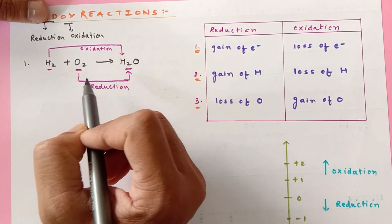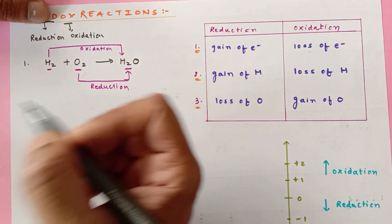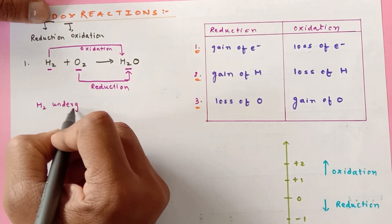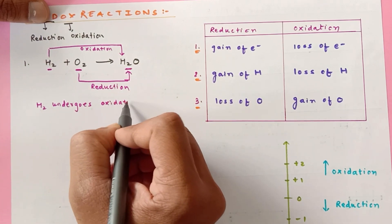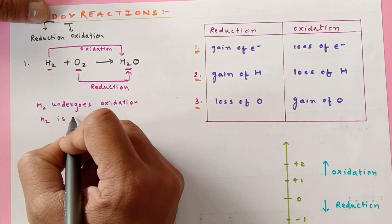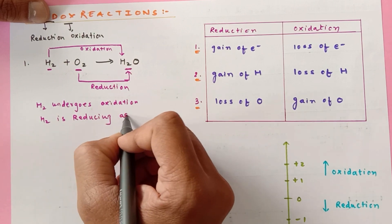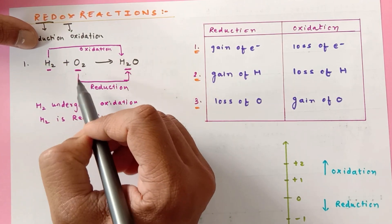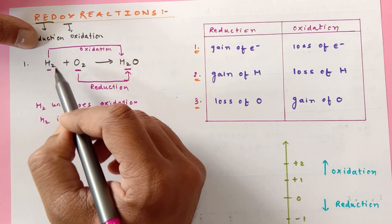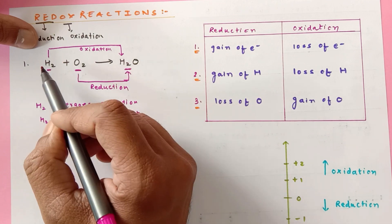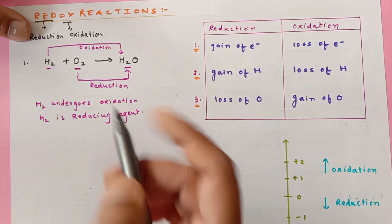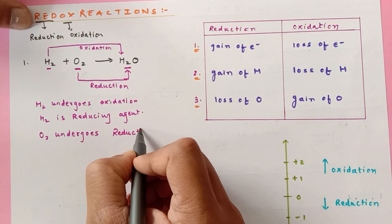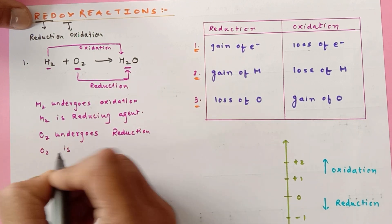So here hydrogen undergoes oxidation and oxygen undergoes reduction. Now, the substance which undergoes oxidation is called the reducing agent, so hydrogen is the reducing agent. Why? Because oxygen undergoes reduction due to the presence of hydrogen — hydrogen is basically the agent which causes the reduction of oxygen. In the same way, oxygen undergoes oxidation — wait, oxygen is the oxidizing agent.